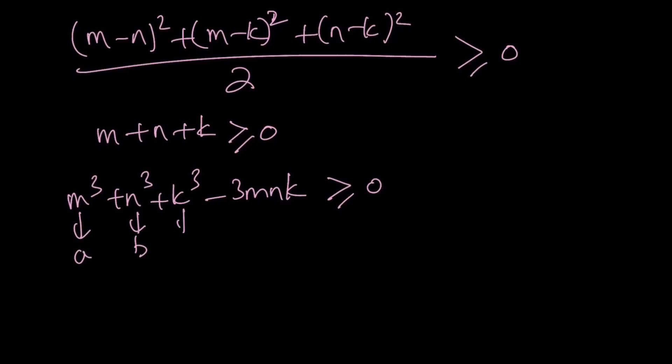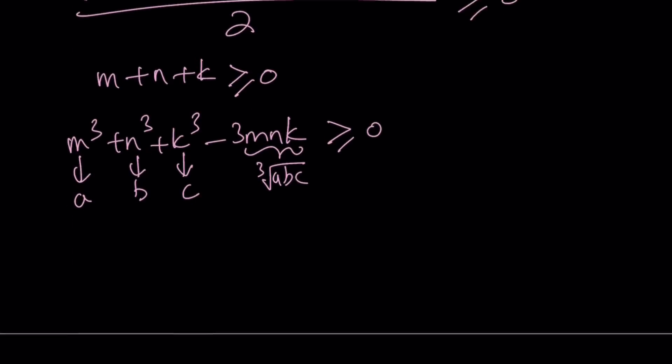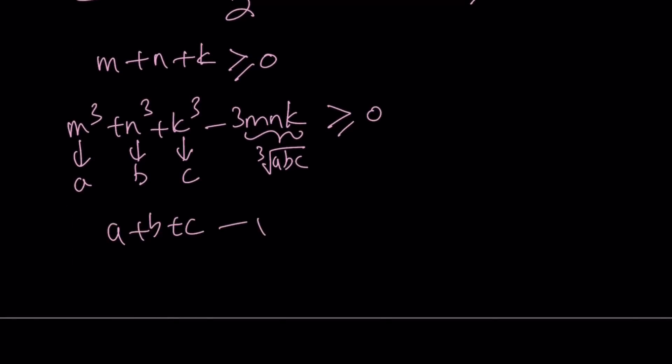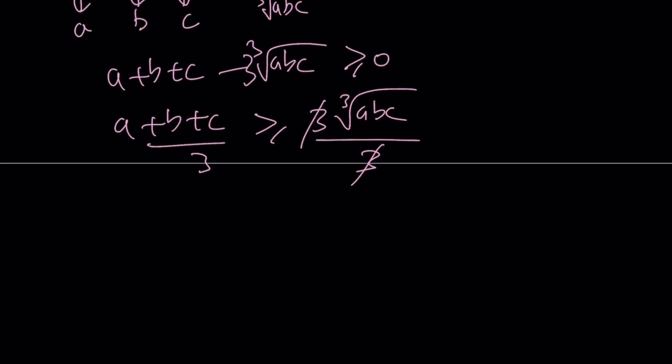This is A, this is B, and this is C. And this is going to be the product of their cube root, which is cube root of ABC. And this gives us A plus B plus C minus 3 times the cube root of ABC greater or equal to 0. And then this means A plus B plus C is greater than or equal to 3 times the cube root of ABC. And then divide both sides by 3. And you will get the AM-GM inequality. So AM-GM inequality works like this. And let's see how we can apply it to our situation.